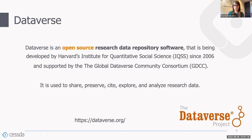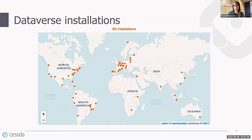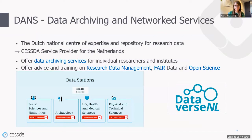You can find Dataverse at dataverse.org. Dataverse has many installations — at the time I was looking, a couple of weeks ago, it had 83 installations worldwide. You can see that many are based in North America and Europe, with quite a few in the Netherlands. It's spreading all over the world and the community consortium is growing significantly in recent years, so there may be even more installations now.